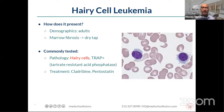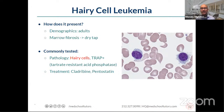In myelofibrosis we saw dacrocytes (teardrop cells), and you can see a similar lonely teardrop cell in hairy cell leukemia for the same physiologic reason — cells squeezing out of an abnormal bone marrow. For CD markers, there is CD103 in hairy cell leukemia, but that's advanced pathology unlikely to appear on Step 1 or Comlex. Focus on TRAP positivity and the dry tap as the key identifiers.